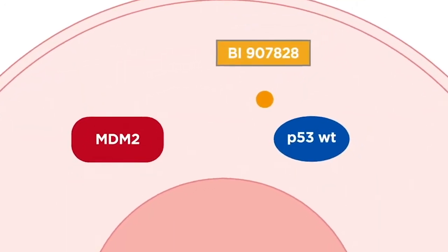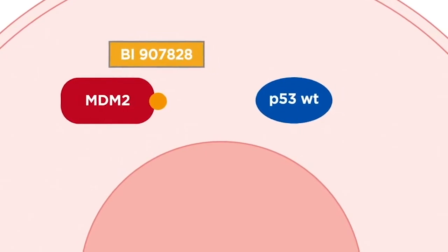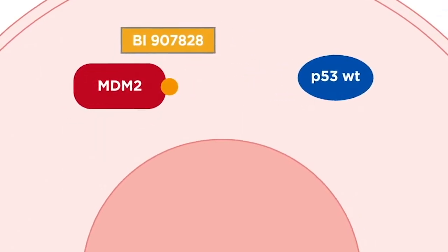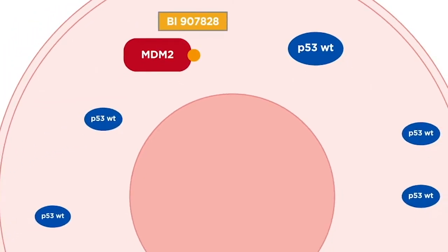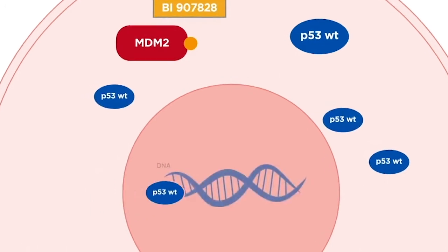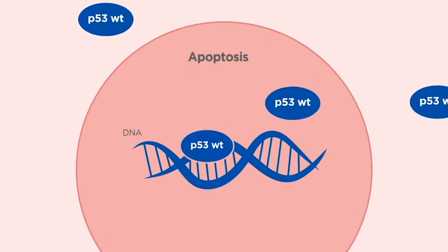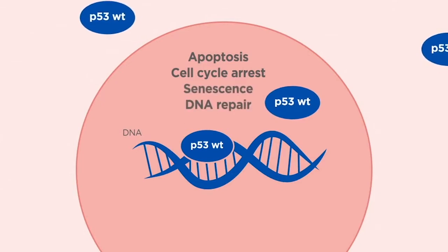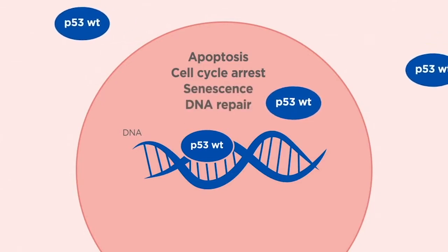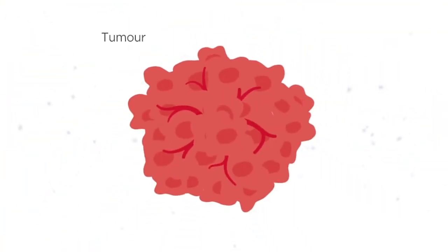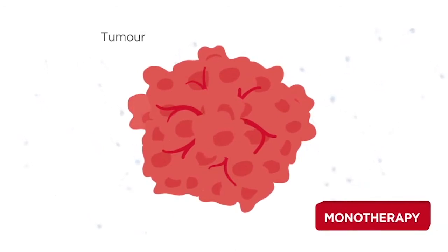BI907828 is an inhibitor that binds to MDM2 protein, preventing its interaction with p53 protein, allowing p53 to be stabilized and move into the nucleus where it activates target genes that drive apoptosis, cell cycle arrest, senescence, and DNA repair in tumor cells with wild-type p53.